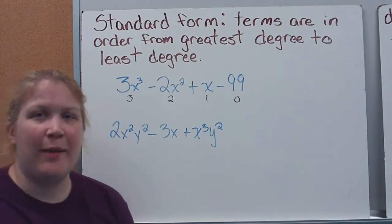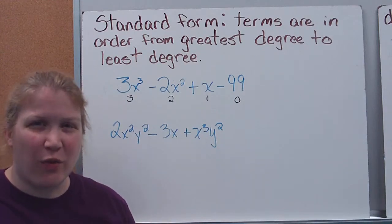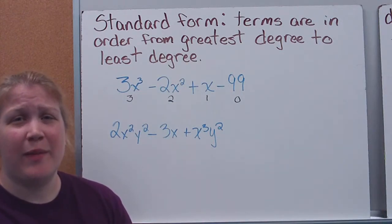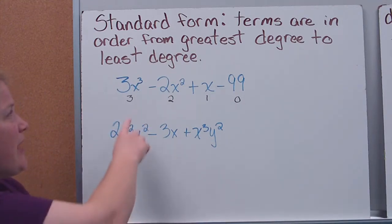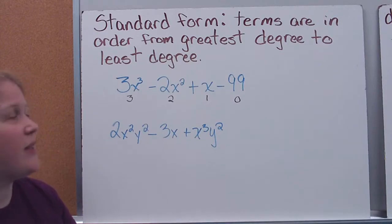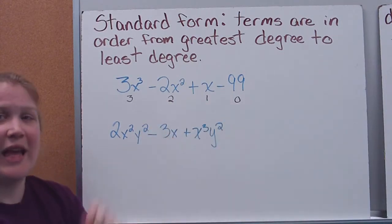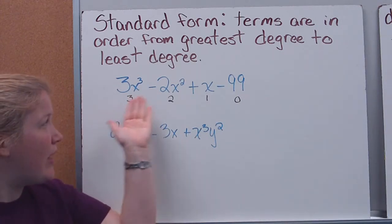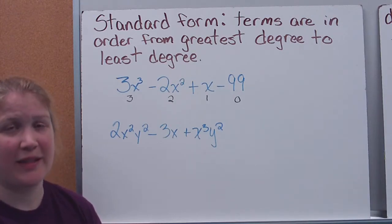The last thing we're going to look at is writing polynomials in what we call standard form. This is the traditional, proper way that you want to see them. Standard form simply means we're putting them in descending order — from greatest to least — based on the exponent of the variable, or the degree of the term. If you look at this example, it's already in standard form: degree of 3, then 2, then 1, then 0 — going in descending order, starting with the largest degree and working down.